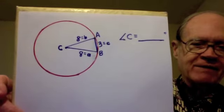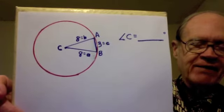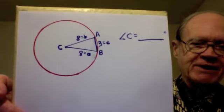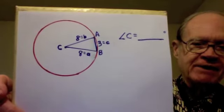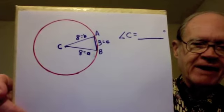So we have sides a and b, both length 8—that's each a radius of the circle—and then we have this chord, side c, length 3, and we are to find angle C.